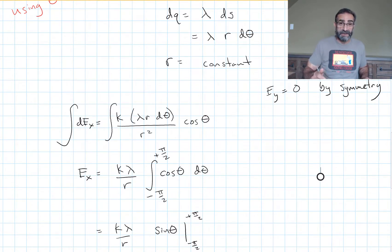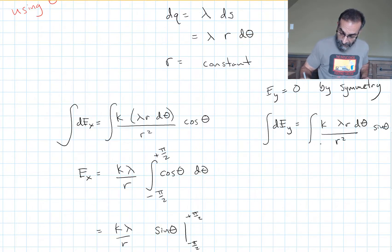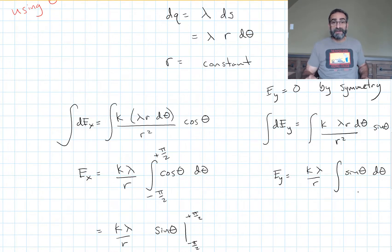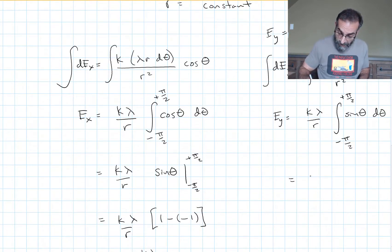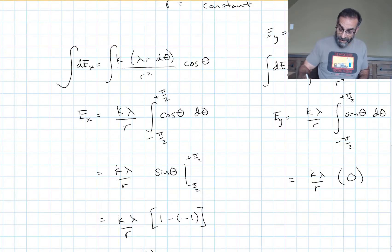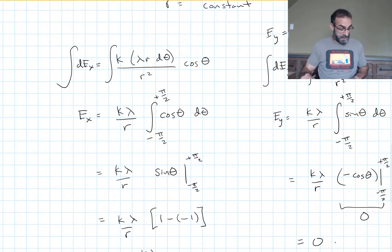Let's do the y-direction quickly to make sure we get zero — you should pause and try it yourself first. The integral this time is ∫sin(θ)·dθ from −π/2 to +π/2. Integrating sine gives negative cosine. Evaluating −cos(θ) from −π/2 to +π/2 gives zero, which is exactly what we expected.